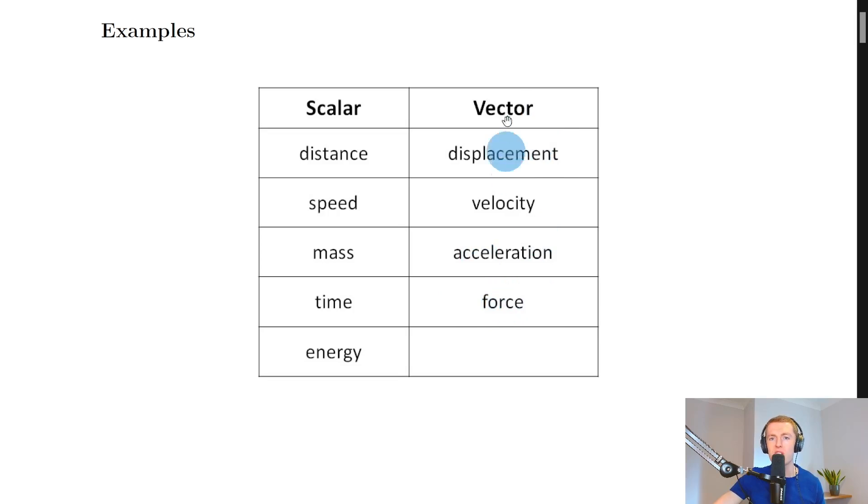We then have force, which is our last vector in the table. And this means that when we talk about forces, we are interested in both the magnitude of the force and its direction. So it's very useful to know which direction forces are acting in. And our last scalar is energy. So when we think about energies, we only think about the magnitude or size of the energy. We don't have a direction for the energy.